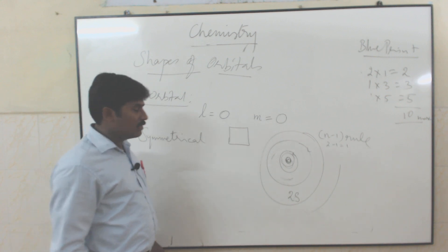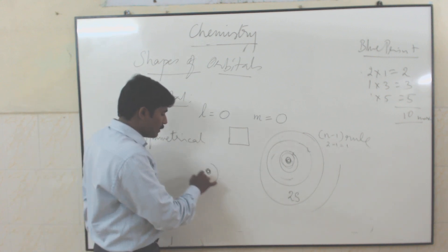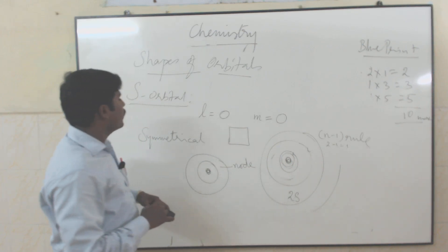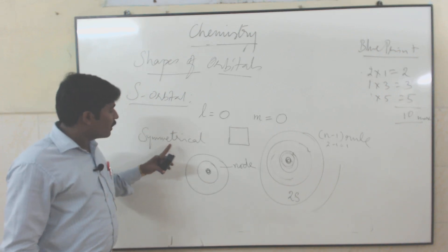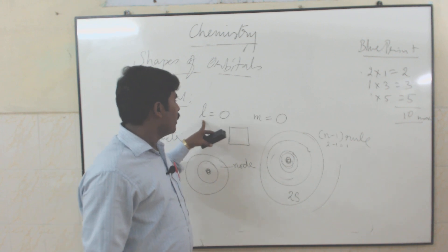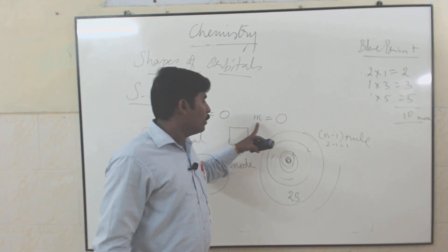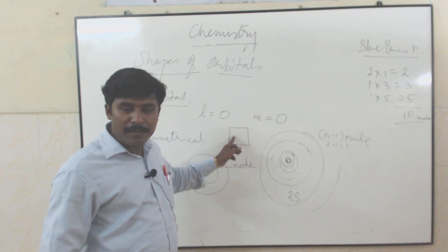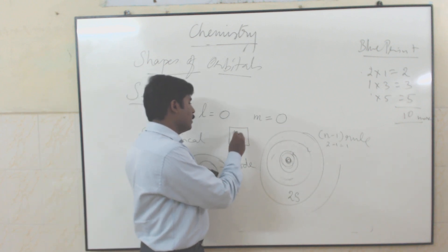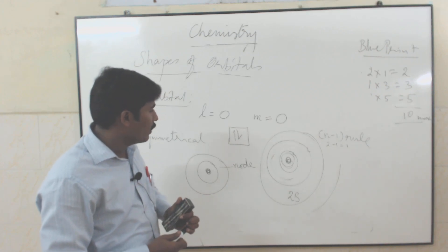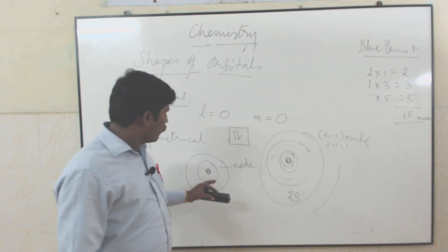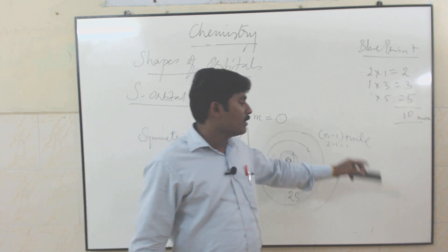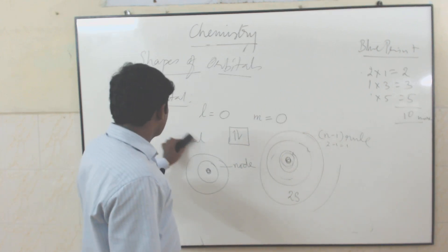So the shape of s orbitals is symmetrically spherical. In between shells is the node. For s orbital: l equals 0, m value also equals 0, so there is no orientation — only one orbit. In that orbit you can fill a maximum of 2 electrons (one spin up, one spin down). For 2s: 1 node; 3s: 2 nodes; 4s: 3 nodes. Common formula is n minus 1.